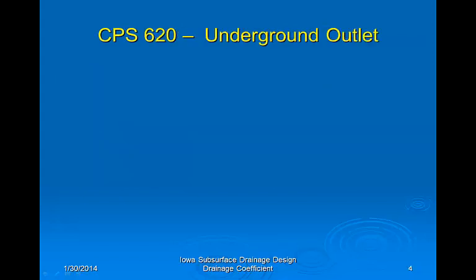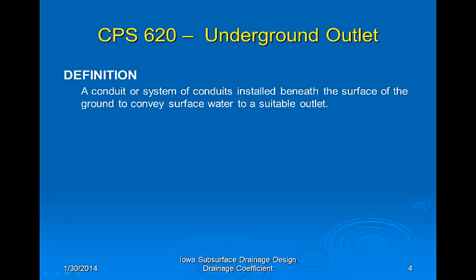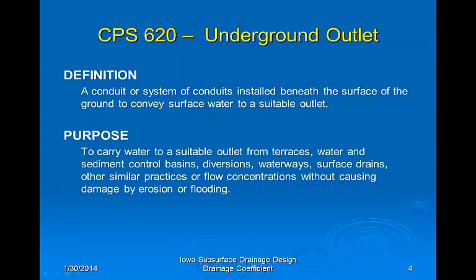The second NRCS standard is Conservation Practice Standard 620, Underground Outlet, which defines the underground outlet as a conduit or system of conduits installed beneath the surface of the ground to convey surface water to a suitable outlet. Its purpose is to carry water from terraces, water and sediment control basins, diversions, waterways, surface drains, and other similar practices without causing damage by erosion or flooding.